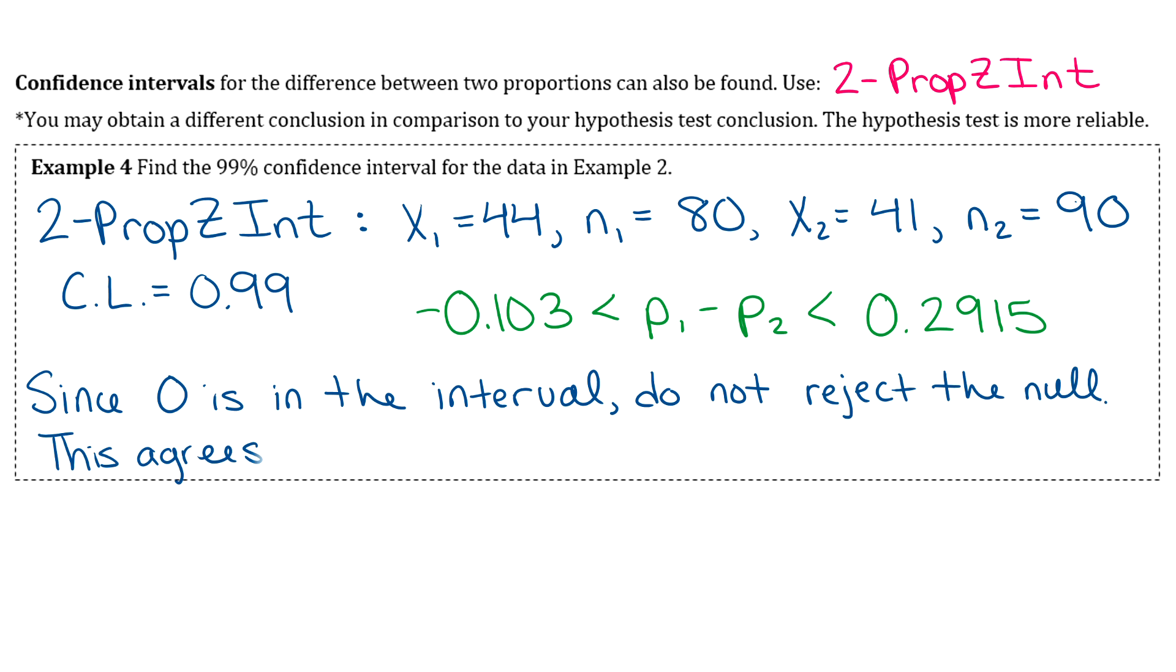That does agree with the result that we got from example two. Now you may have noticed that unlike all the examples we've done, and if you've done the homework, we always end up saying that they agree. That should always be the case. If you get a different result from your confidence interval than your hypothesis test, then you did something wrong.